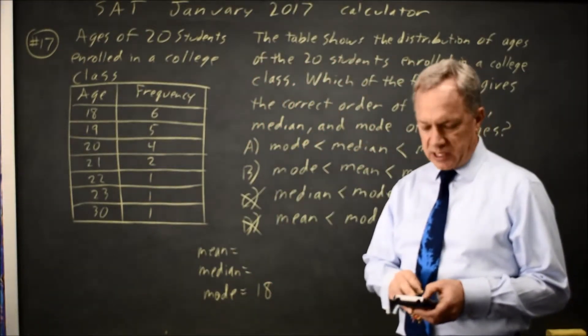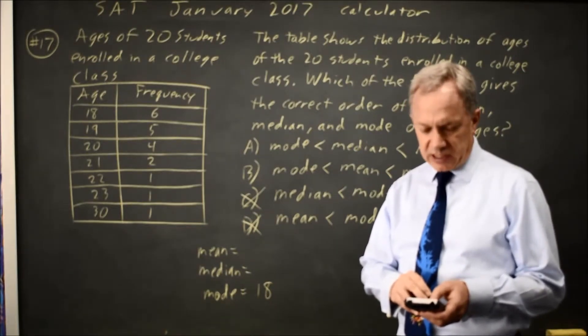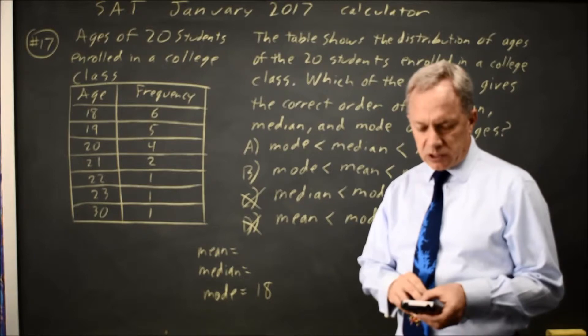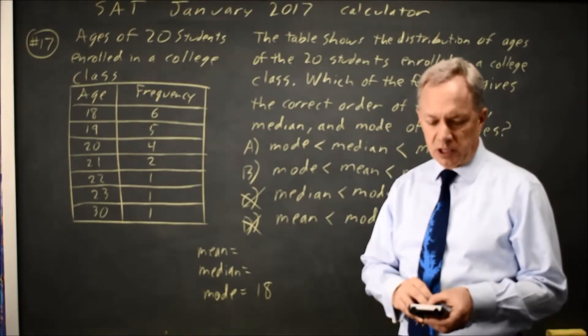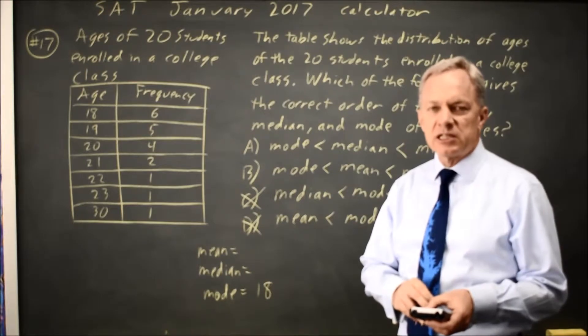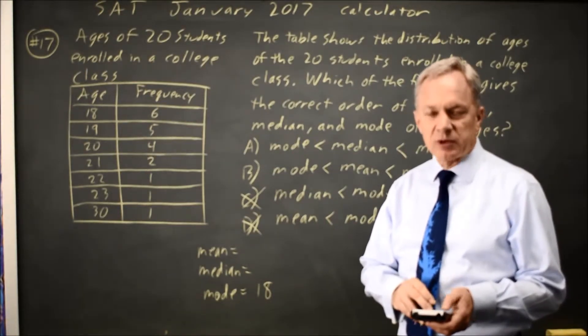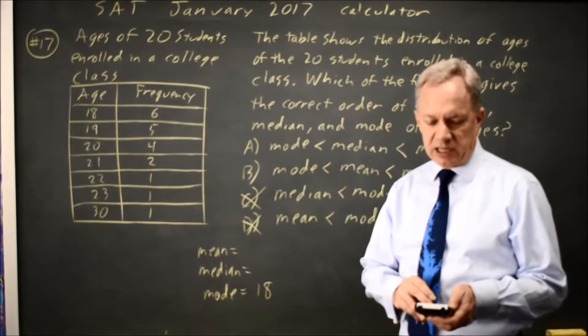Then I go to stat, calculate, and hit enter for one-variable statistics. List defaults to list 1, L1. If you don't have that there, second 1 gives you L1. Frequency list, if that appears, second 2 gives you list 2, which is where I put the frequency. Scroll down to calculate and hit enter.